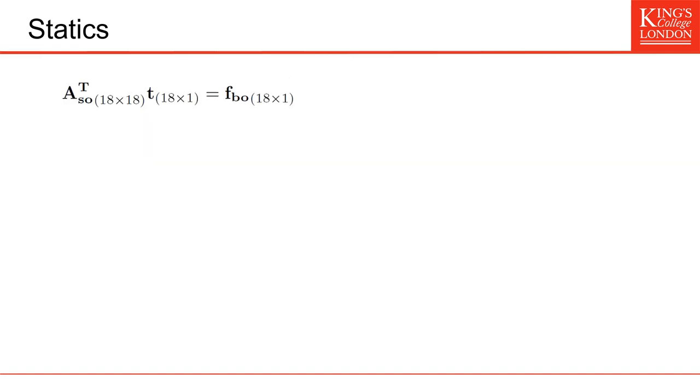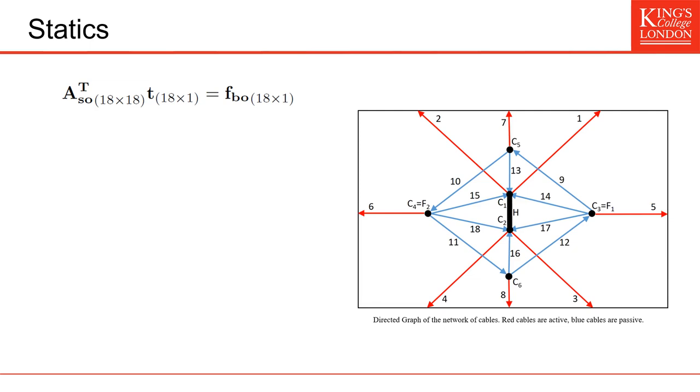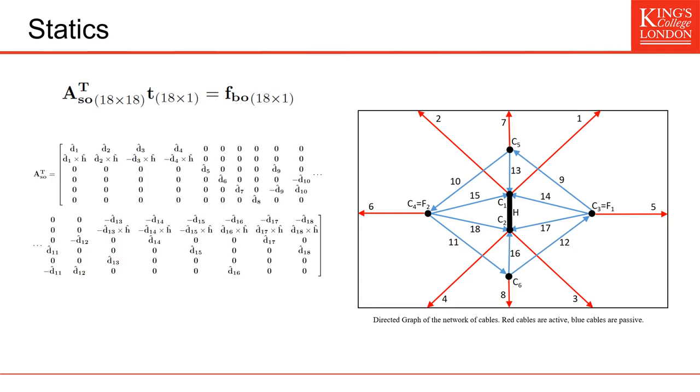To establish this initial static matrix, we can construct a directed graph of all the cables. In this graph, the red cables are the active cables, and the blue cables are the passive cables. And each set of rows correspond to a number of static equations. So the first three rows correspond to the force on the handle, the next three rows correspond to the torque on the handle, and the remaining 12 rows correspond to the linear forces on points C3 to C6.